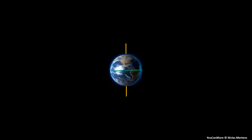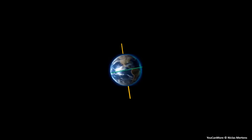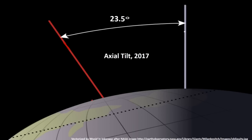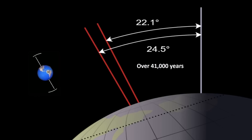Obliquity has to do with how the Earth spins. It does not spin in a vertical manner; instead, it spins with a tilt. The tilt is not constant — it changes over time. Currently, the actual tilt is about 23.5 degrees from the vertical. The full range of obliquity is from 22.1 degrees to 24.5 degrees. To cycle through the full range takes 41,000 years, during which the tilt has a significant impact on our climate.